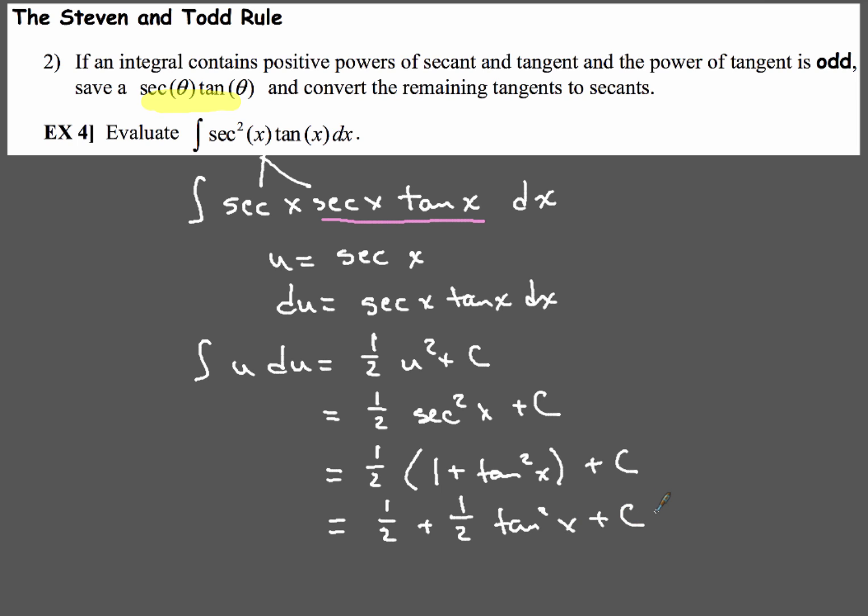Now what your textbook is going to do is it's going to take these two numbers right here, this 1 half and then this plus c, and it's going to combine those, because a half and a c, that's still just going to give you a constant. So your textbook may in fact end up just changing this to just 1 half tan squared x plus c.